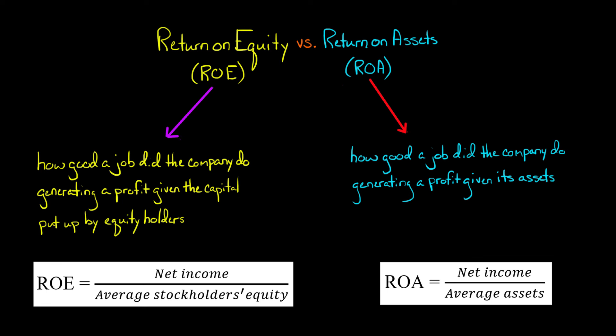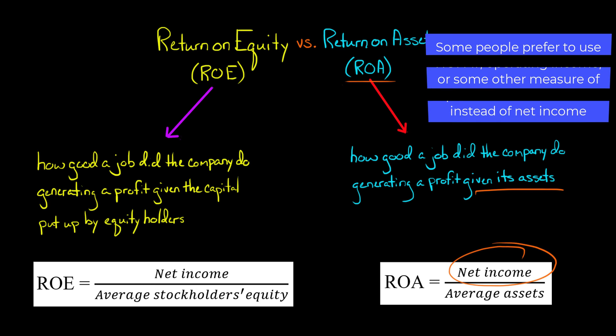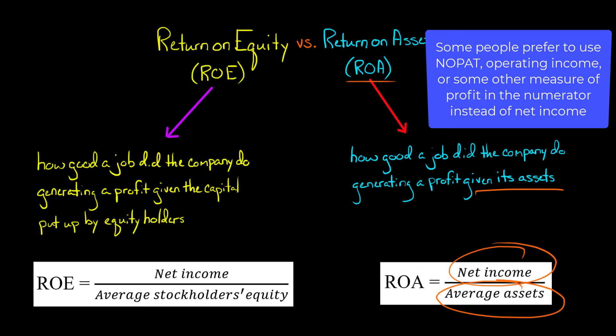In this video, we're going to discuss the difference between a company's return on equity and its return on assets. Return on assets, or ROA for short, tells you how good a job the company did generating a profit given the assets it had at its disposal. ROA is a great way to compare the profitability of two companies that are very different sizes, because it takes the net income of the company and scales it by the assets used to generate that net income.